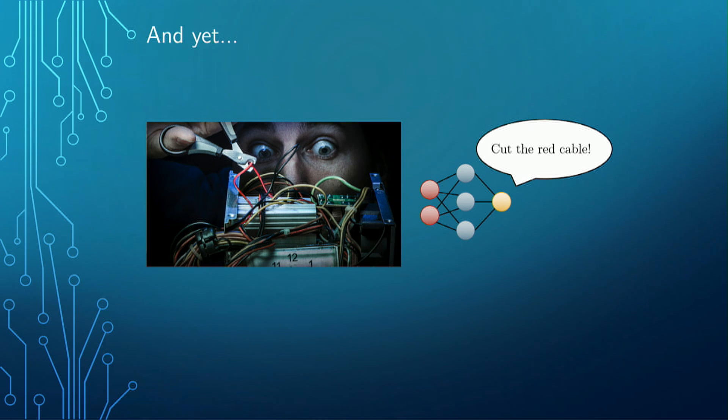You train the algorithm, it works fine — perfect. But then it goes into a real application. You're faced with a real bomb, and if you cut the wrong cable it explodes. You get just one answer from the algorithm. Well, I don't know about you, but I'd like a bit more information. How sure is the algorithm? Was it more or less sure, but just a little less confident it wasn't the blue cable? I just want a bit more.